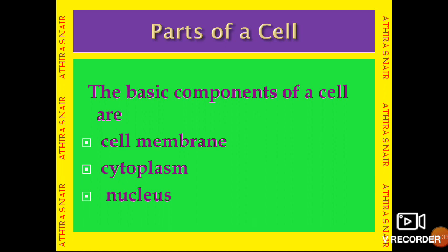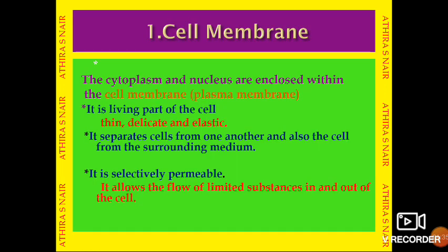Parts of a cell: the basic components of a cell are the cell membrane, cytoplasm, nucleus, and a number of cell organelles. The cytoplasm and nucleus are enclosed within the cell membrane.